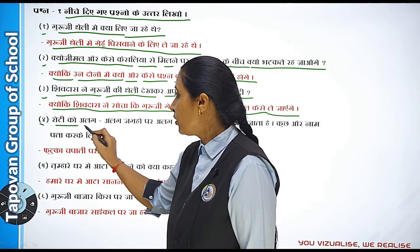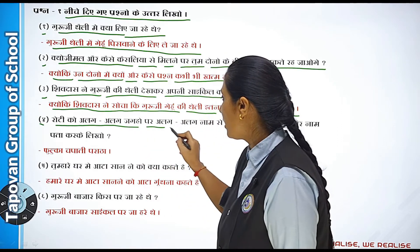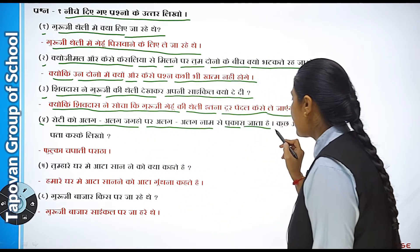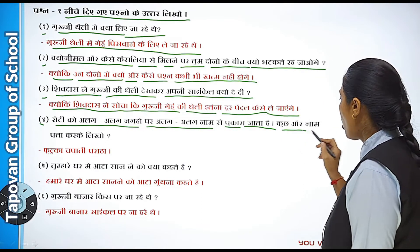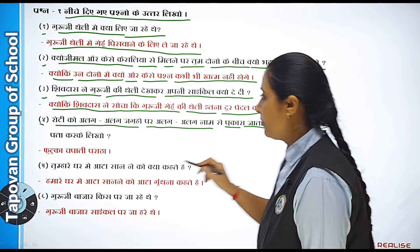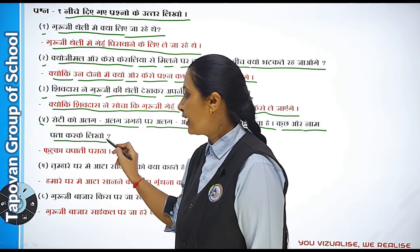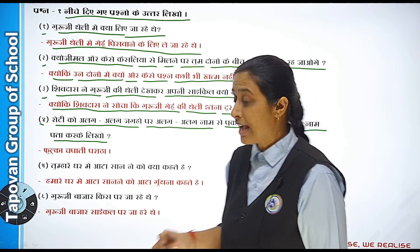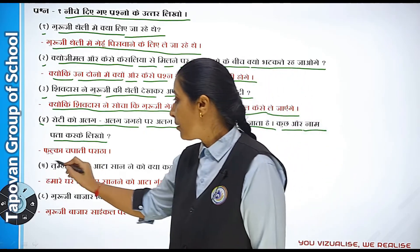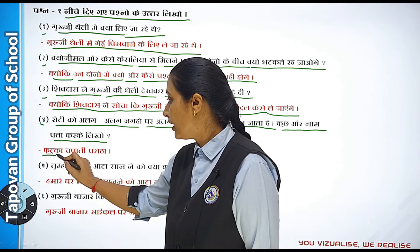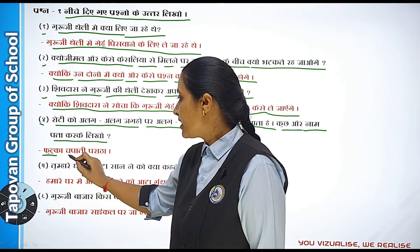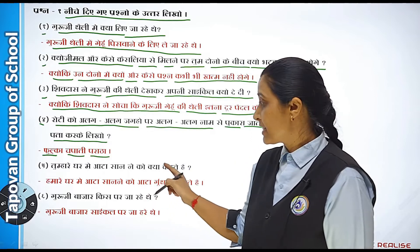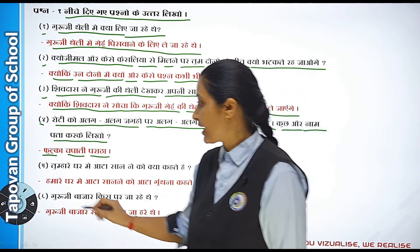Chautha hai: Roti ko alag-alag jagah par alag-alag naam se pukara jaata hai — kuch aur naam pata karke likho. Toh bachcho, roti ke alag-alag naam hain jaise — pulka, chapati, paratha. Toh aapko aise answer likhna hai.